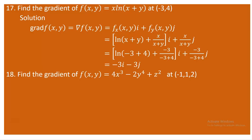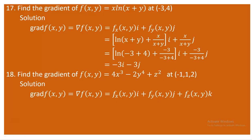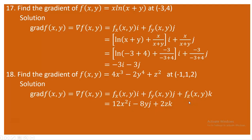For question 18, we have a function of three variables f(x,y,z) = 4x³ - 2y⁴ + z². We are asked to find the gradient at the point (-1, 1, 2). The gradient ∇f(x,y,z) is the partial derivative with respect to x along i, with respect to y along j, and with respect to z along k. Differentiating: ∂f/∂x = 12x²·i, ∂f/∂y = -8y³·j, ∂f/∂z = 2z·k.